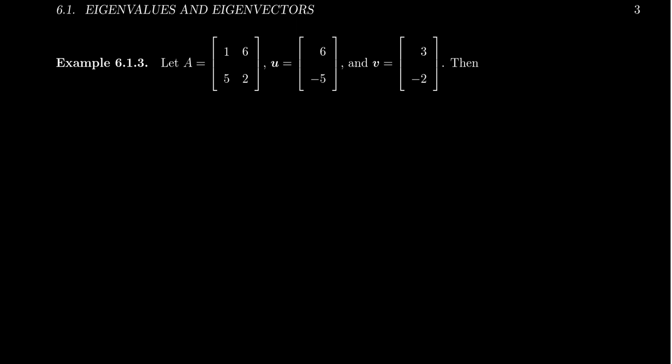So we have a matrix A, which is given to you, that 2 by 2: 1, 6, 5, 2. And I have two vectors. How can we check to see if these are eigenvectors or not? It turns out all we have to do is multiply together the matrix and the vector.